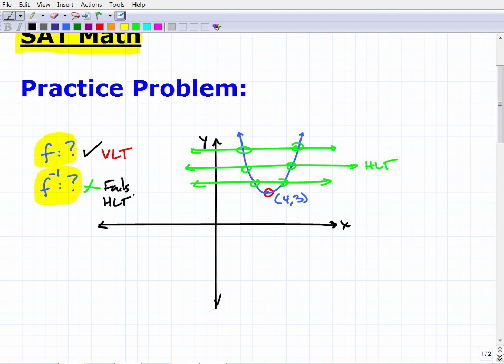So this fails the HLT, the horizontal line test. That means that although this is a function, it does not have an inverse function.